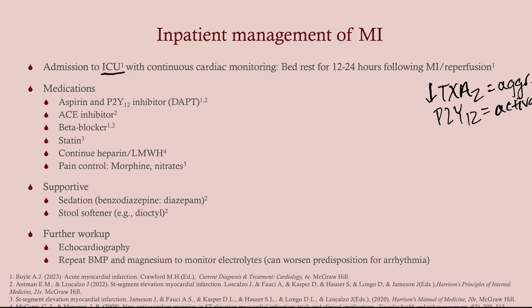We put these patients on ACE inhibitors and on a beta blocker. If they're actively hypertensive, they'll be on an IV beta blocker; otherwise, we put them on an oral beta blocker. These patients will be on beta blockers for the rest of their life — we'll get to that when we talk about outpatient management. These patients will also be on a high dose statin, and our goal is to get their LDL to under 70 in most instances. If you're unable to do that on a high dose statin, you would add ezetimibe. In the inpatient setting, we're not constantly watching the LDL because it takes time for those to work.